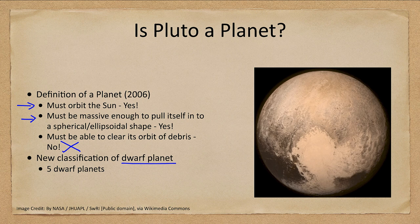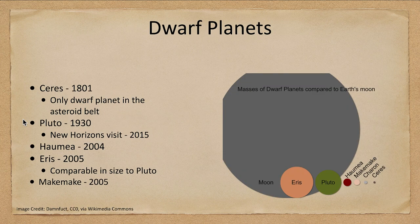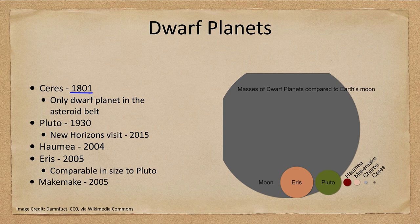A new classification was created: the dwarf planet. There are now five confirmed dwarf planets in the solar system. The first dwarf planet was actually discovered in 1801 — that was Ceres, the largest object in the asteroid belt and the only dwarf planet found there. When Ceres was discovered it was thought to be a new planet, originally classified as a planet between Mars and Jupiter, but then reclassified as an asteroid, and then again as a dwarf planet.